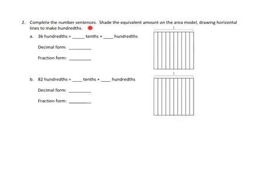Problem two asks us to complete the number sentences, shade the equivalent amount in the area model, drawing horizontal lines to make hundredths. Let's take a look at 2b. We have eighty-two hundredths, and that is the same as how many tenths and how many hundredths. We can break down eighty-two hundredths into eight tenths and two one-hundredths. In decimal form, that would be eight tenths and two hundredths. In fractional form, eighty-two hundredths would be eighty-two over one hundred — eighty-two one-hundredths.